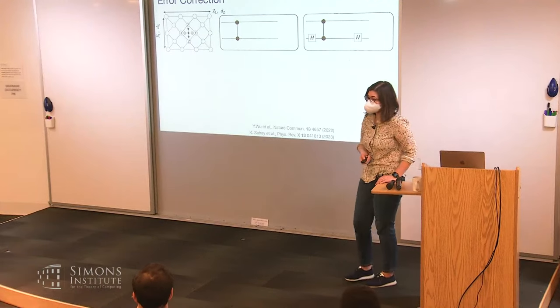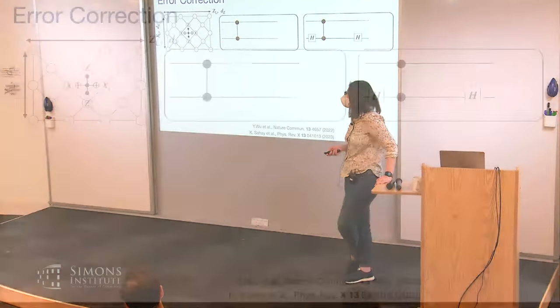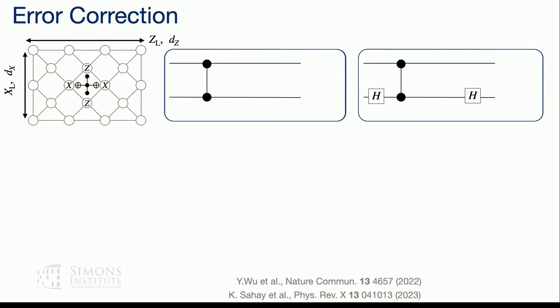So how do we do error correction in this system? The dominant source of error is a biased erasure, which is like a Pauli I or Z. Our first approach is: what error-correcting code has very high thresholds for Z-type noise? That's the XZX surface code. The XZX surface code is like a regular surface code but with one type of stabilizer — four-body XZXZ operators acting on qubits around each plaquette. You can make a rectangular lattice to choose the protection distance against Z and X errors separately. If you only have Z errors, you can make one dimension longer and dx equal to one, essentially giving you a repetition code.